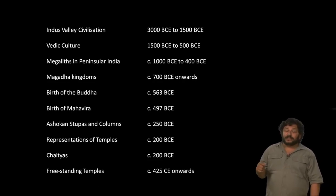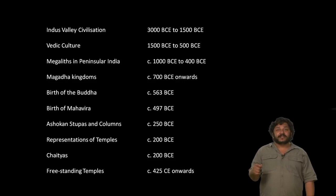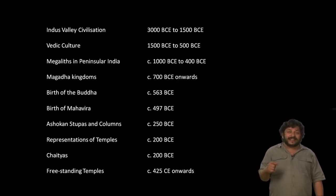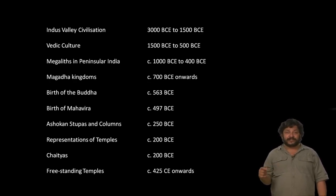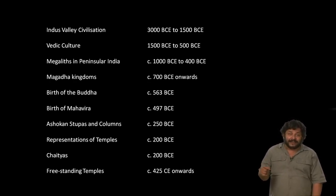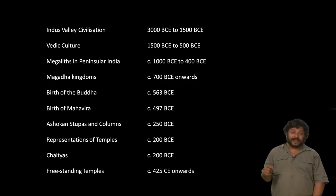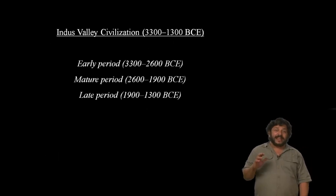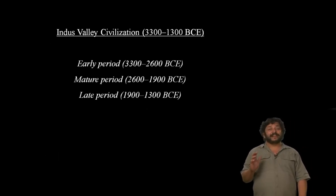In the meantime, Buddhist cave sites have Chaityas and also Viharas, and we start getting somewhere around the second, third, and fourth century CE freestanding temples, the first one being Temple 17 at Sanchi. But to begin with, we have to start with the Indus Valley.